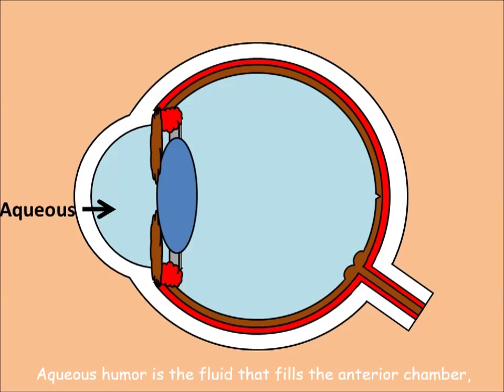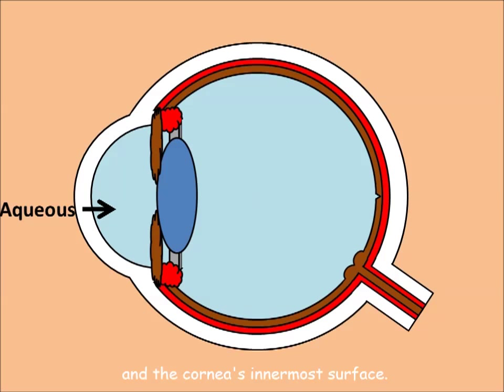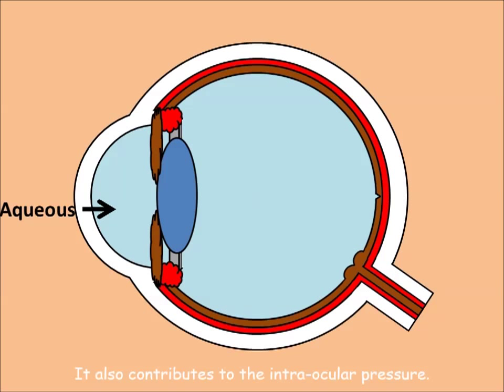Aqueous humor is the fluid that fills the anterior chamber, which is the fluid-filled space inside the eye between the iris and the cornea's innermost surface. The aqueous humor nourishes the cornea and the crystalline lens, and it also contributes to the intraocular pressure.